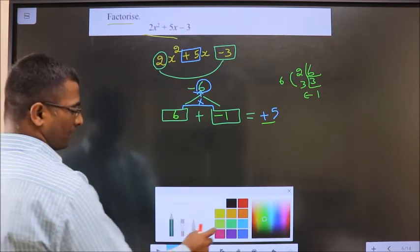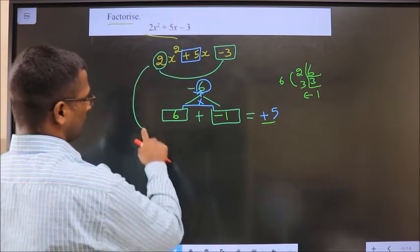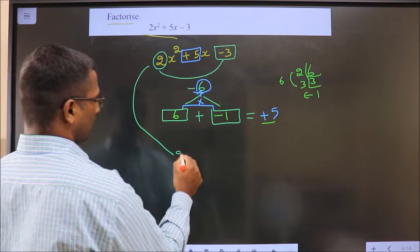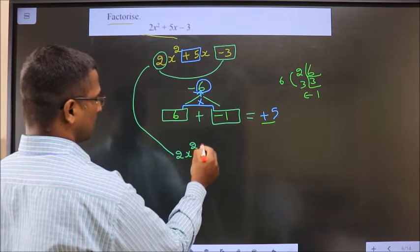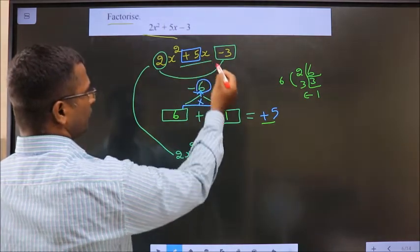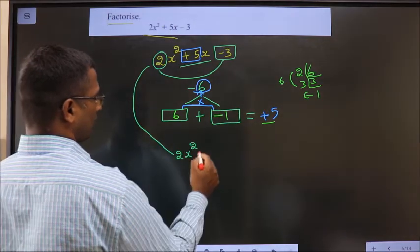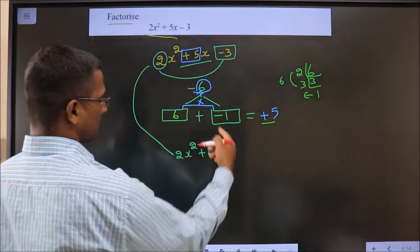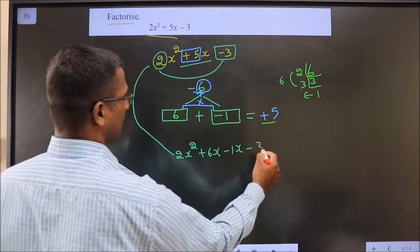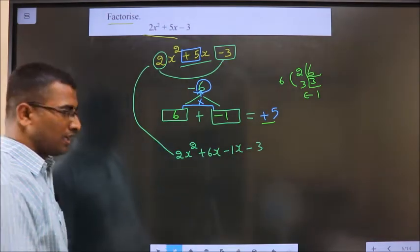Now, this will change to 2x square as it is. In place of 5x, we should write plus 6x and minus 1x minus 3.